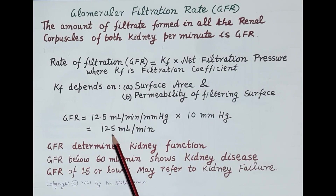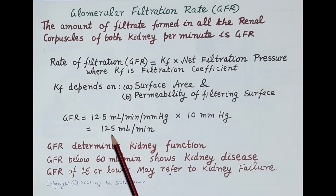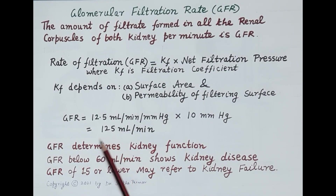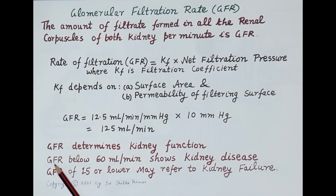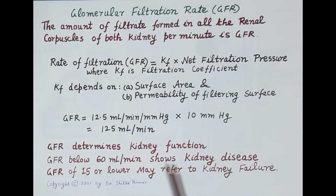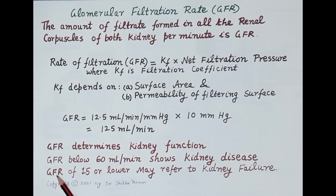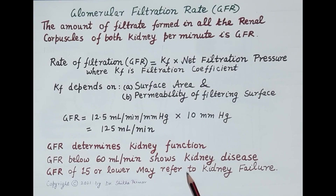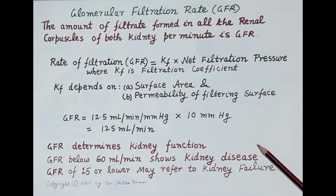GFR is a key indicator of kidney function. A GFR below 60 ml per minute indicates kidney disease. A GFR of 15 ml per minute or lower indicates kidney failure. Therefore, GFR is the most important parameter to determine kidney functioning.